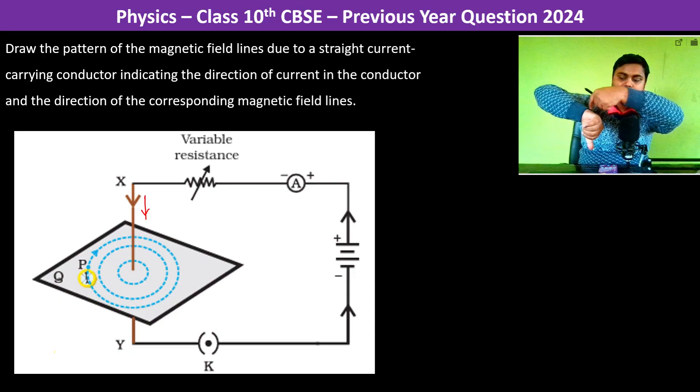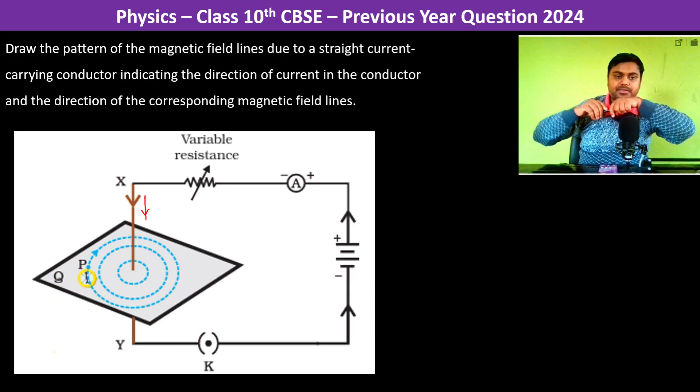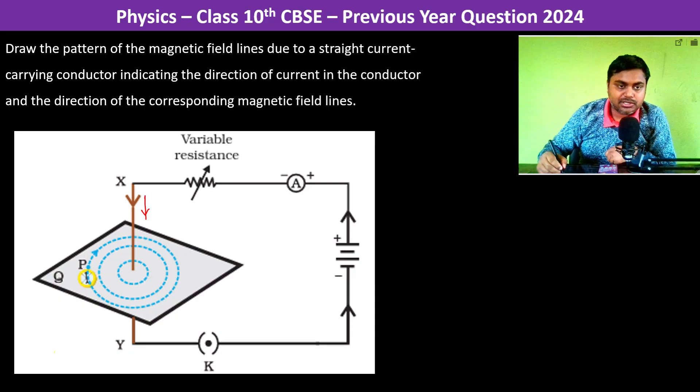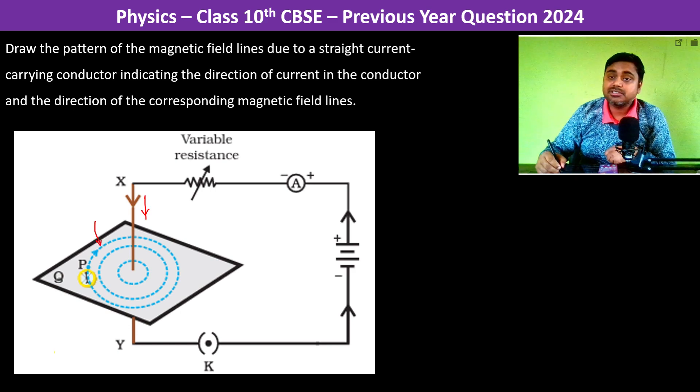The magnetic field lines will be around it. These magnetic field lines are around it and they are in circles, they are in loops.